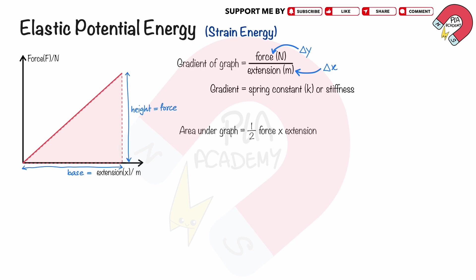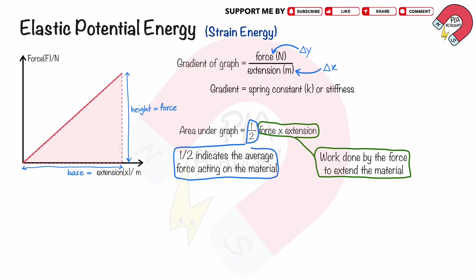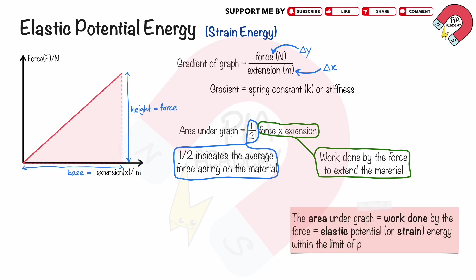The area under the graph is half of the force times the extension. The force times the extension represents the work done by the force to extend or compress the material. The factor one-half arises because the force increases linearly from zero to F during the extension, so the average force is F over 2. So the area under the graph equals the work done by the force, which is equal to the elastic potential energy or strain energy stored within the material, provided the material remains within its limit of proportionality.